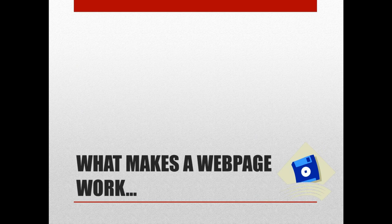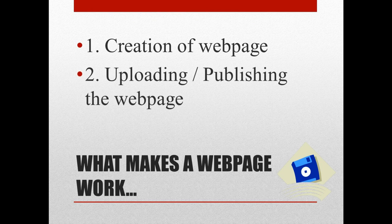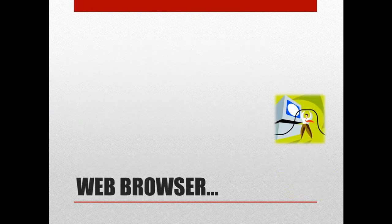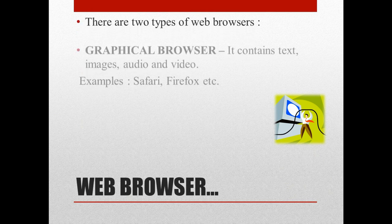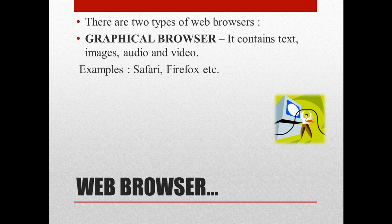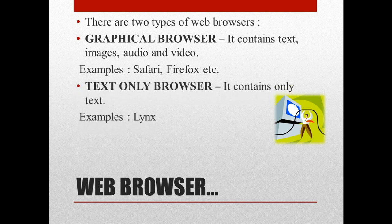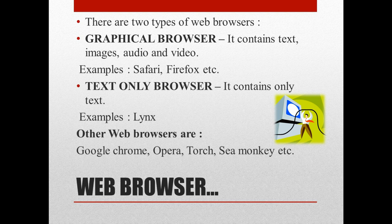What makes a web page work? Creation of a Web Page, Uploading, Publishing of the Web Page, and Retrieval of the Web Page via a Web Browser. There are two types of web browsers: Graphical Browser — contains Text, Images, Audio and Video (e.g., Safari, Firefox). Text Only Browser — contains only text (e.g., Links). Other web browsers include Google Chrome, Opera, Torch, SeaMonkey, etc.